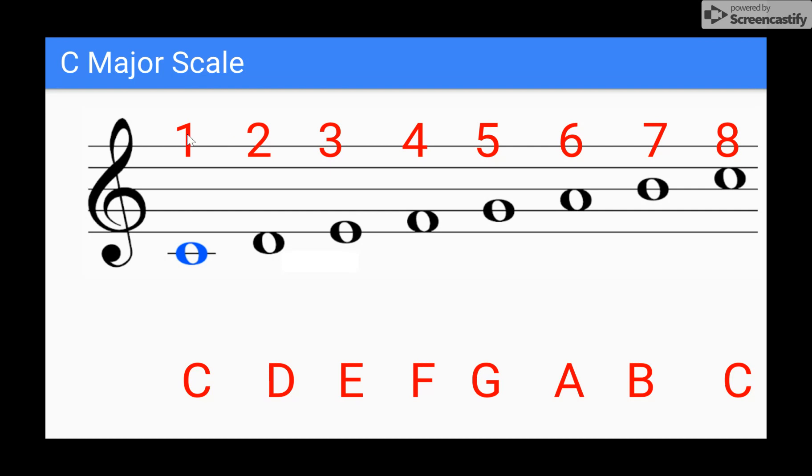Again, scale degree 1 and scale degree 8 are the same: low C and high C.